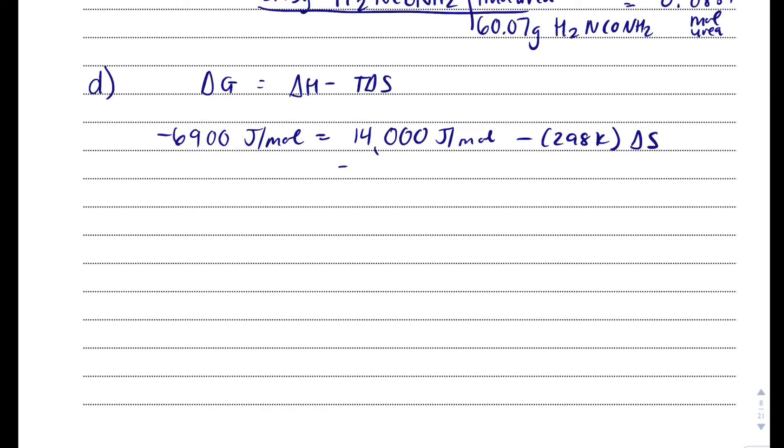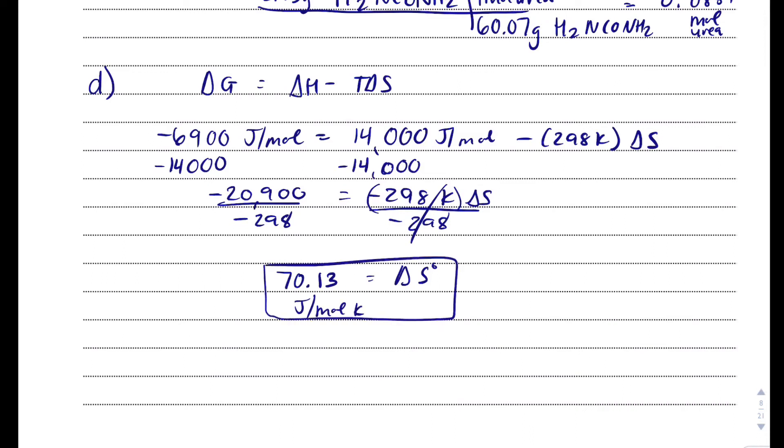So we'll solve for delta S. The first thing you want to do is subtract over 14,000. And so I'm going to get negative 6,900 minus 14,000, and I get negative 20,900 equals negative 298 Kelvin times delta S. We'll divide by negative 298. And this makes sense that a delta S that I get is going to be positive because we're dissolving something. Going from solid to aqueous will definitely increase my entropy. So I get 70.13 joules per mole Kelvin for delta S for letter D.